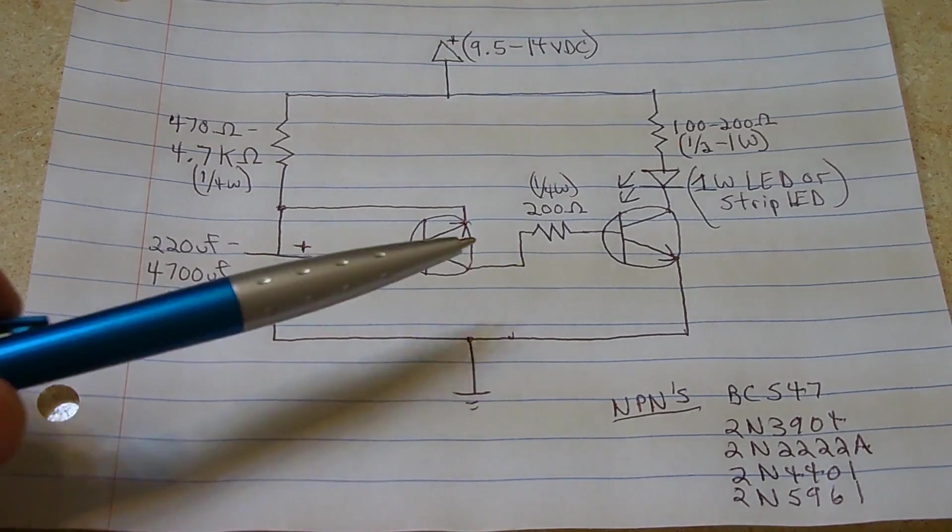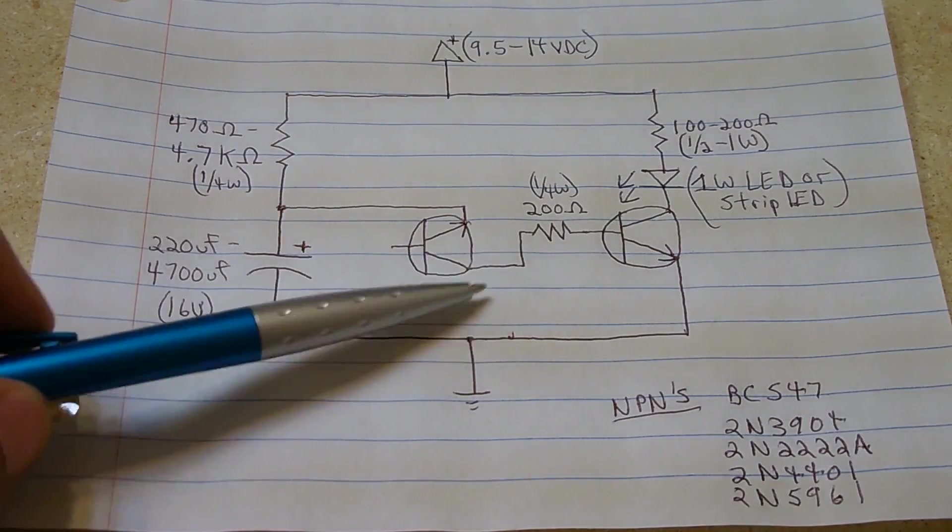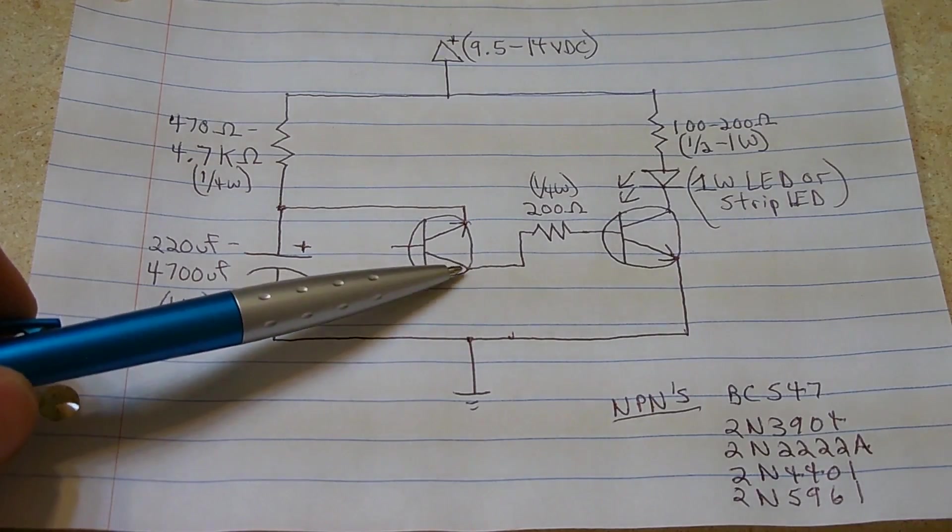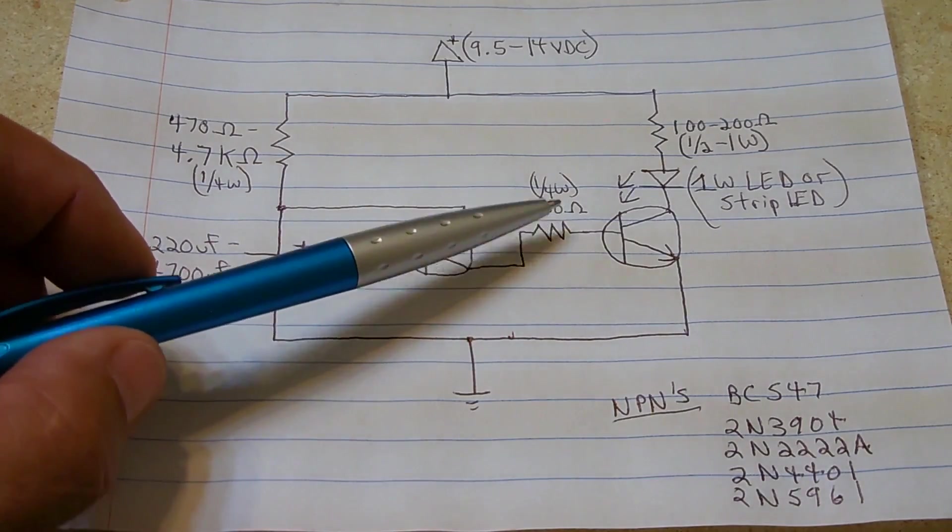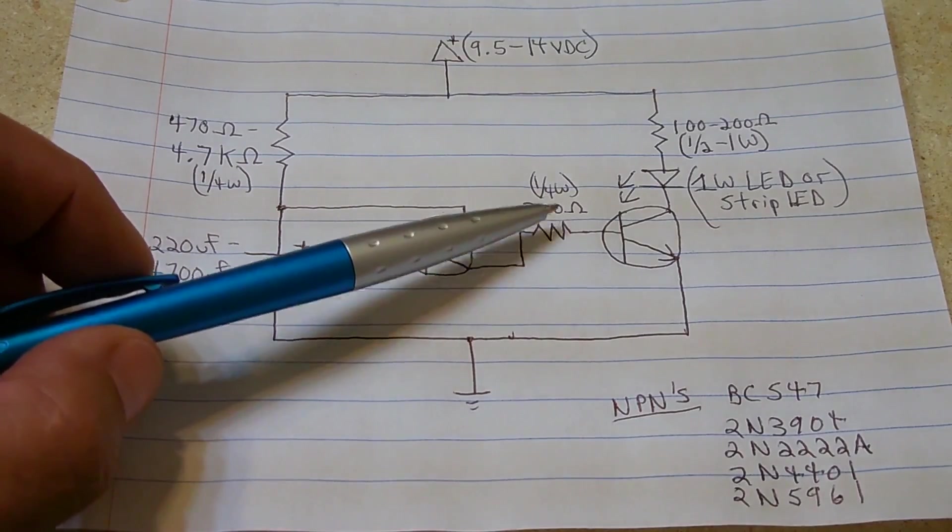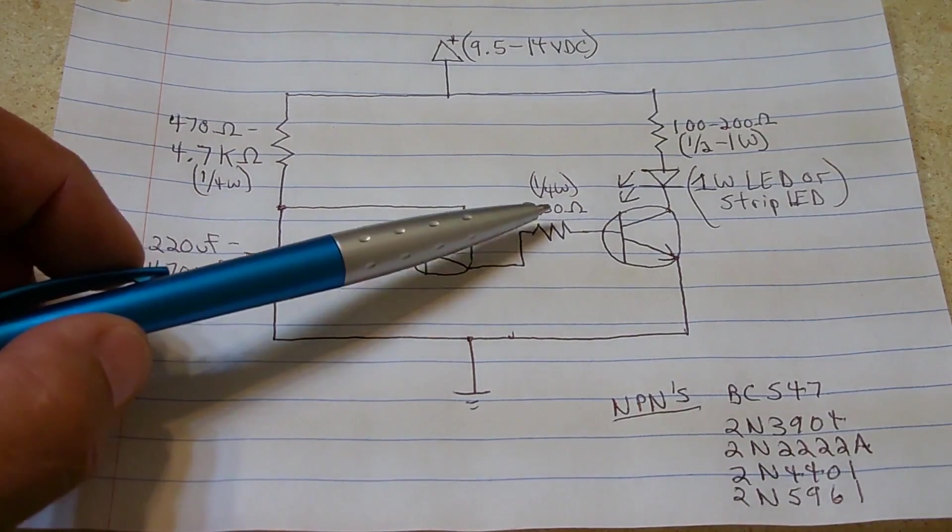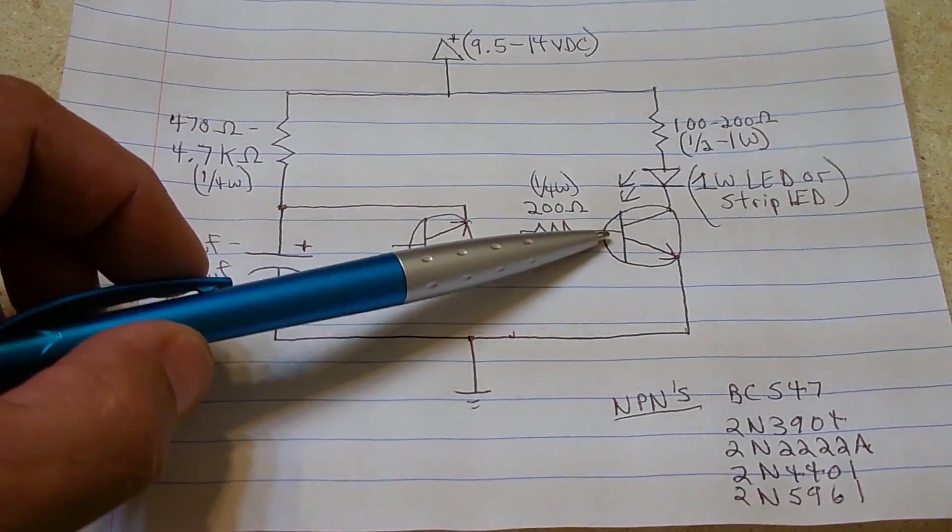For the higher current version that's shown here, without the LED in this position, you're going to take the collector, it's going to go through a 200 ohm resistor. This value is very important, you must keep it low for the circuit to work properly.